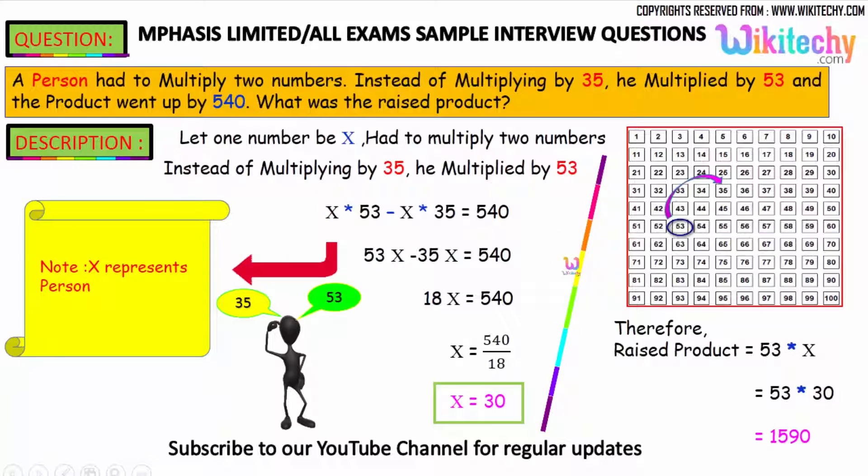So the raised product value is x into 53. So 30 into 53. You get the answer 1590. That is the raised product value.